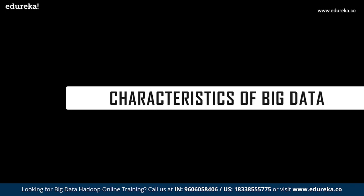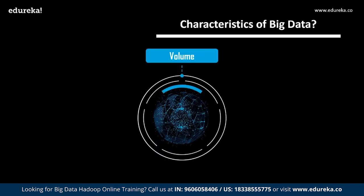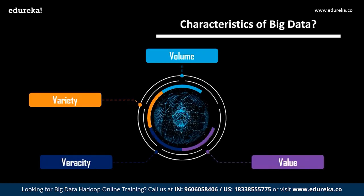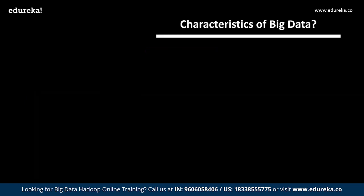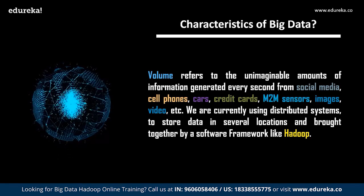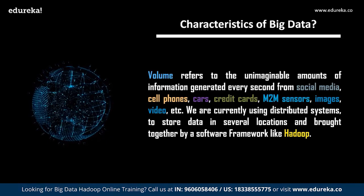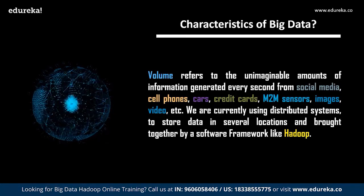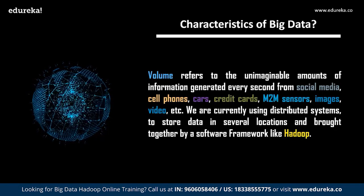Now we shall move into the actual topic — the characteristics of big data. The following image depicts the five V's of big data, but as the data keeps evolving, so will the V's. Firstly, volume — volume refers to the unimaginable amounts of information generated every second from social media, cell phones, cars, credit cards, sensors, images, videos, and more. We currently use distributed systems to store data in several locations, brought together by frameworks like Hadoop.